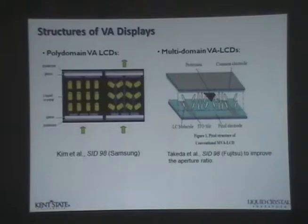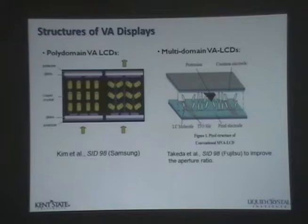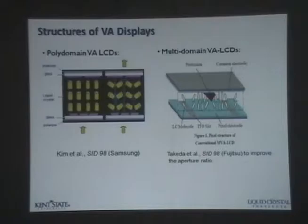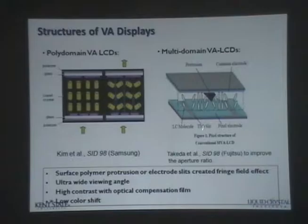Once you have zigzag electrodes, it can have more domains created. This is an earlier version. The differences arise from companies trying to avoid infringing each other's patents — today one company sues another because they use their technology, and the other counter-sues. For this type of vertical alignment, they have wide viewing angle, either using protrusion or these formal zigzag electrodes. They have a high contrast ratio with optical compensation scheme, and low color shift.